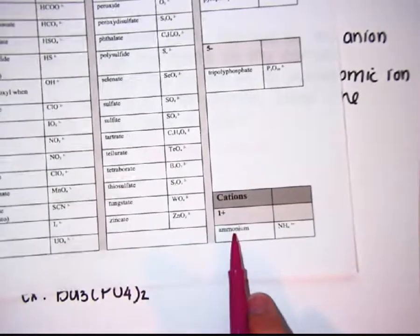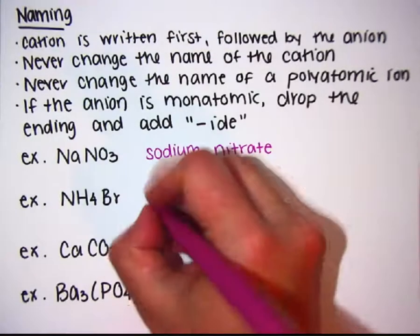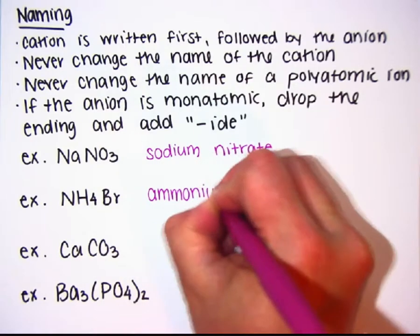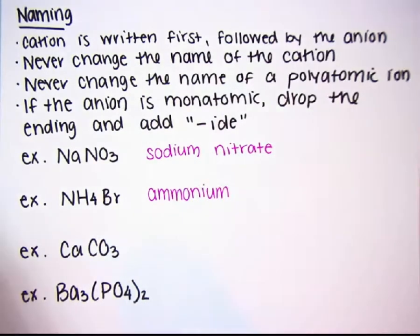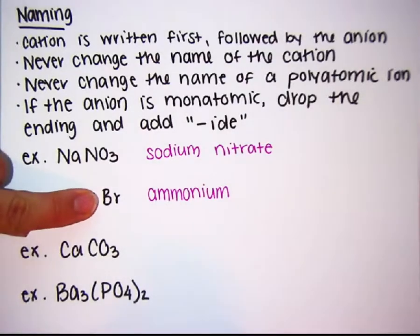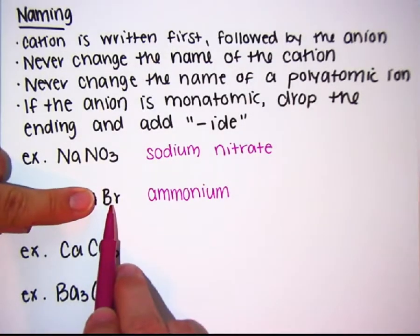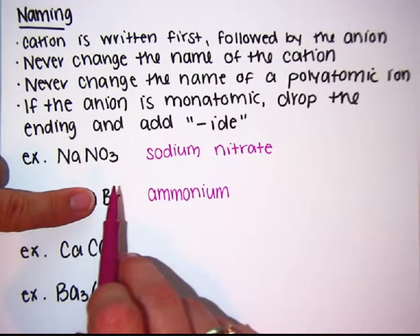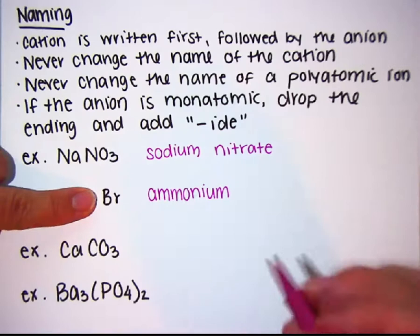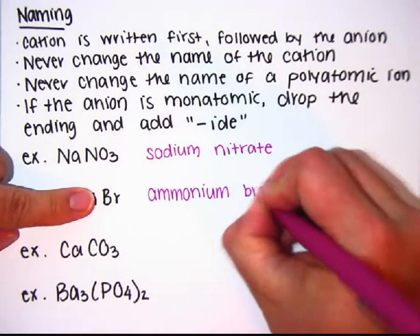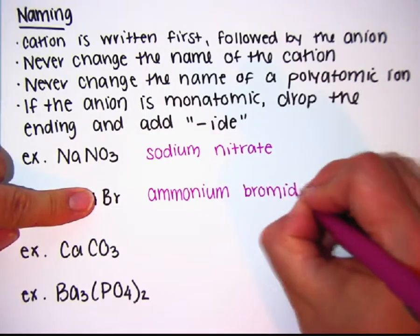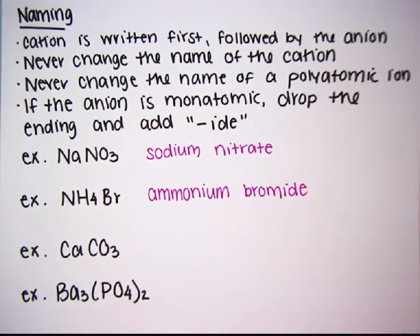NH4 is ammonium — the cation comes first, never change the name of the cation, and it is also polyatomic, so never change the name of the polyatomic ion. Bromine is monatomic — it is only one atom. Following the rules from our binary lesson, for bromine I'm going to drop the ending and add -ide. Bromine becomes bromide. So this compound is ammonium bromide.